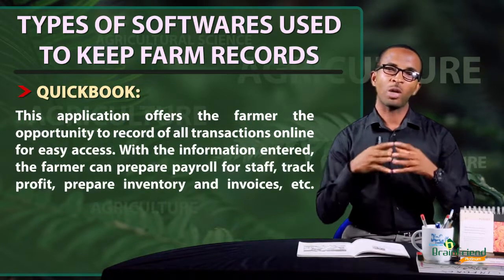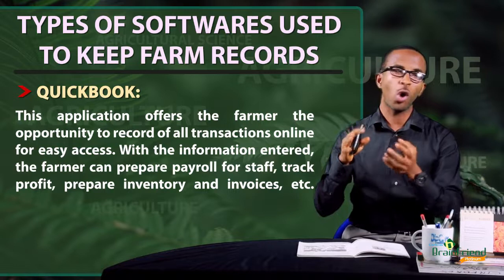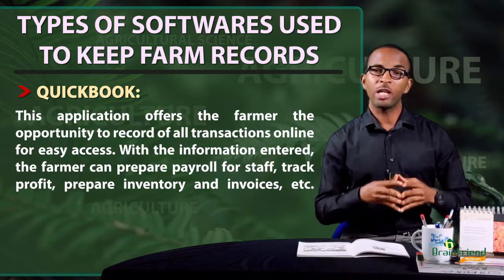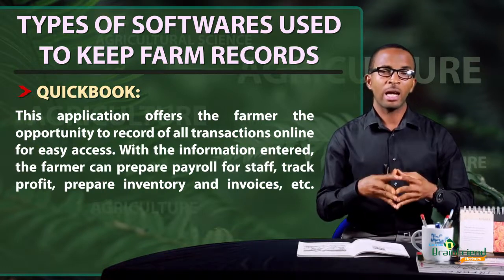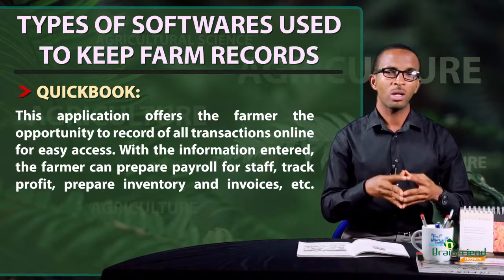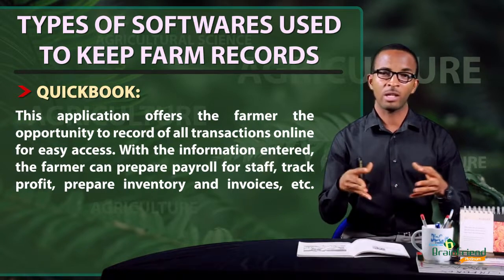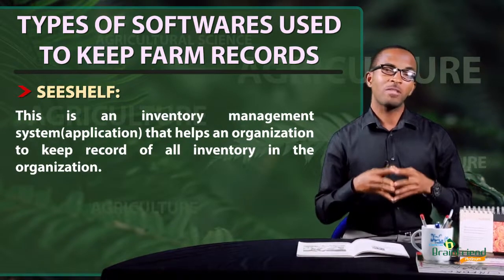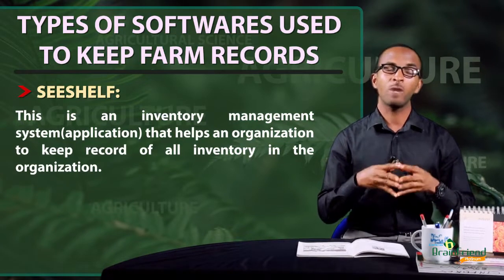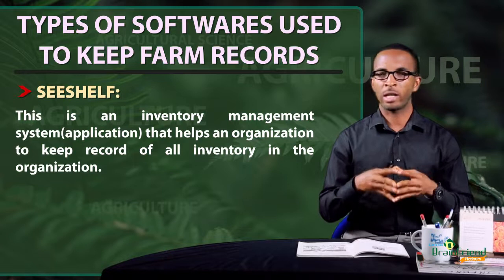QuickBook is an application that offers the farmer the opportunity to record all transactions online for easy access. With the information entered, the farmer can confidently and conveniently prepare staff payroll, track profits, and prepare inventory as well as invoices. Seashelf is a management system that helps the farmer manage his inventory and keep record of all the inventory in the organization.